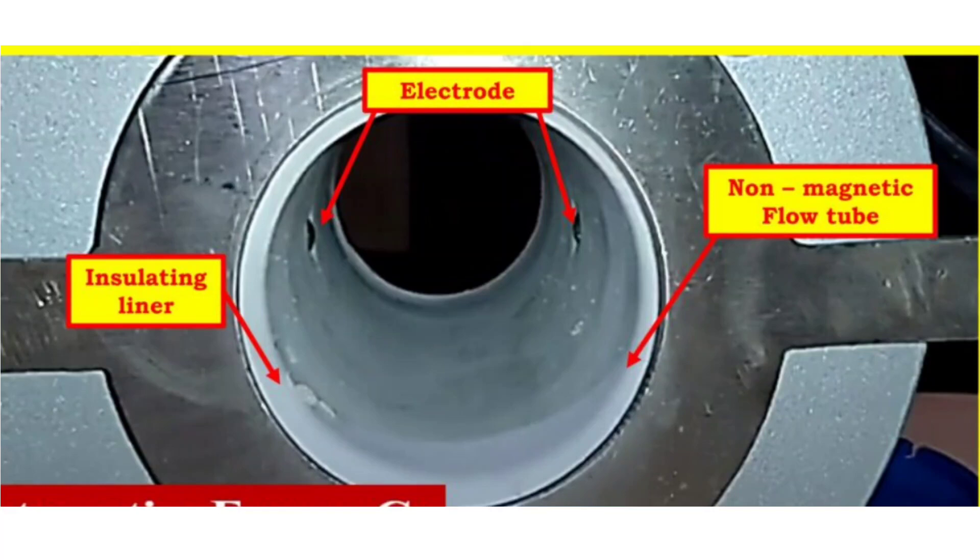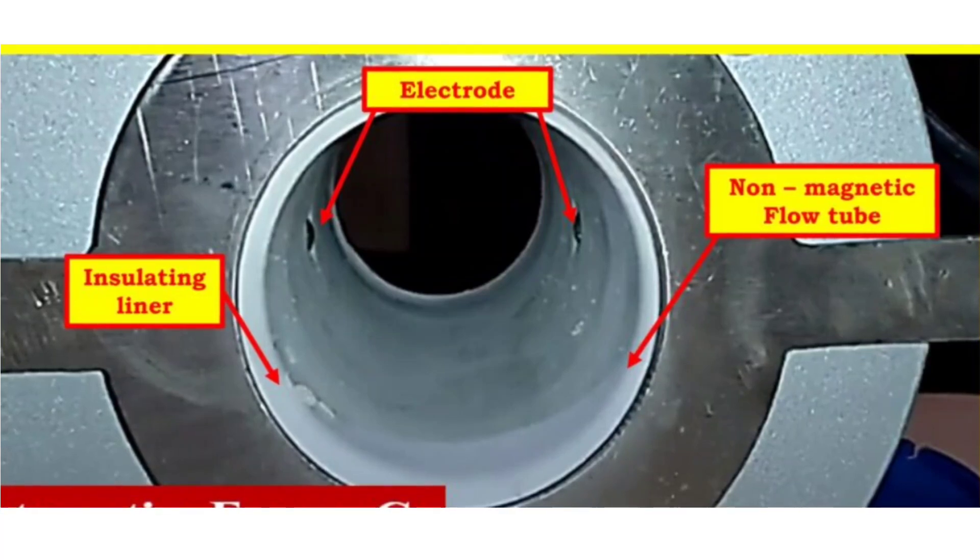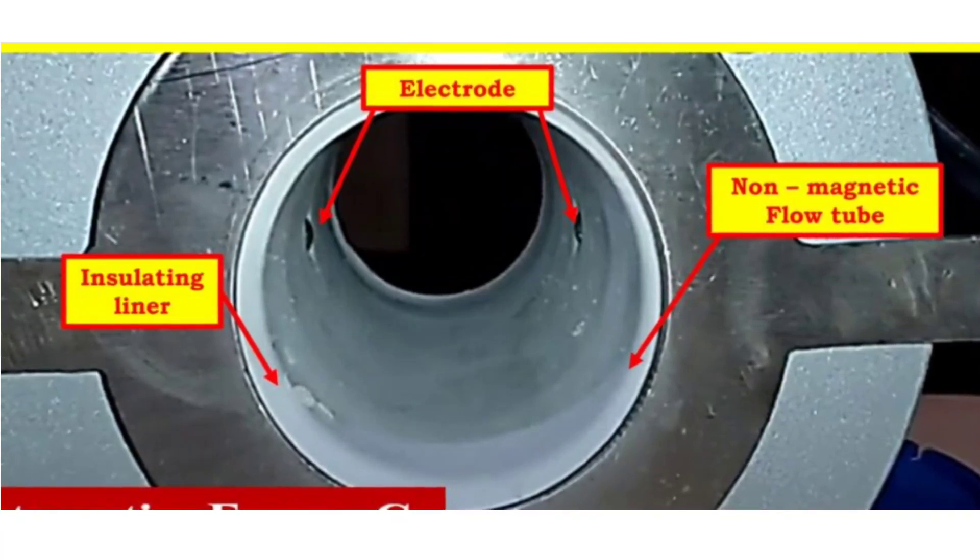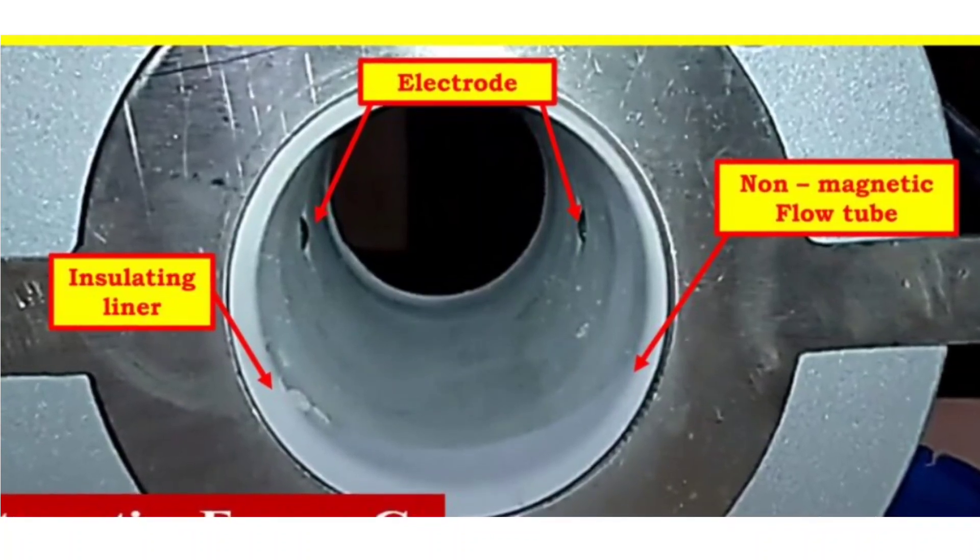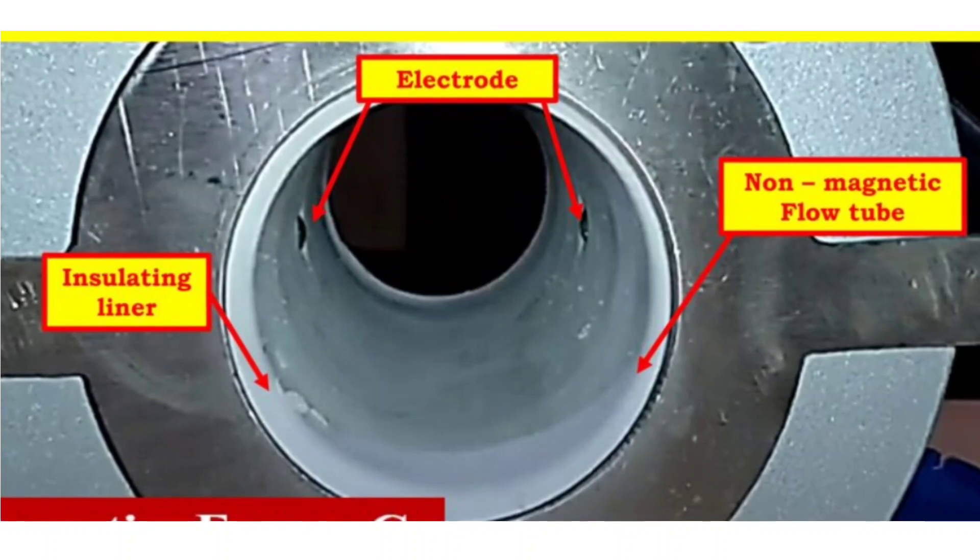Check Electrode Resistance. Make sure the flow tube is filled with water or a conductive fluid. Disconnect the flow tube from the flow meter electronics. Using a multimeter set to the resistance (Ohms) measurement mode.